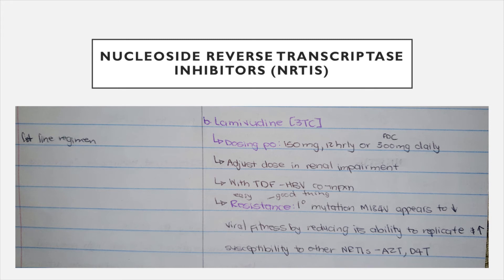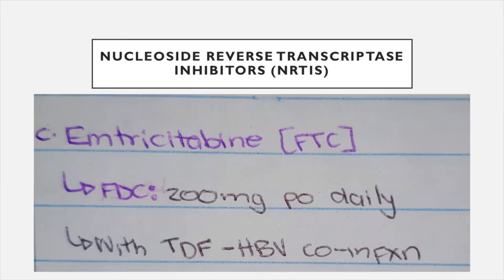Regarding resistance with lamivudine: there is a mutation that decreases the HIV virus's ability to replicate, making it more susceptible to other drugs such as zidovudine and stavudine. This is the only good resistance mutation because it actually affects the virus negatively. Emtricitabine (FTC) — please note the full names and abbreviations as they're commonly used in hospitals and clinics. Emtricitabine is usually in a fixed-dose combination of 200 milligrams in one pill and is also used when there's a hepatitis B infection with tenofovir.